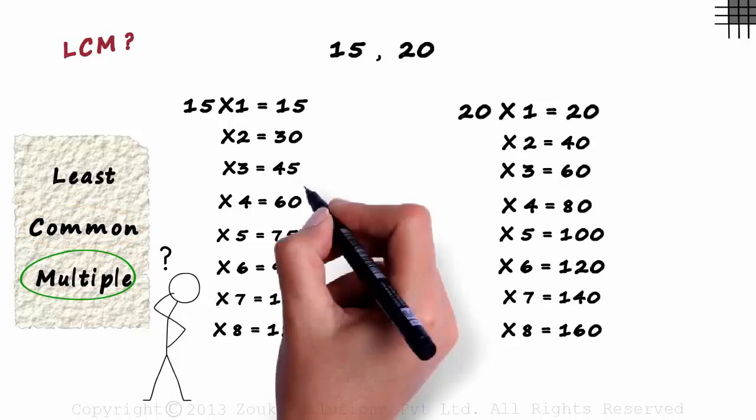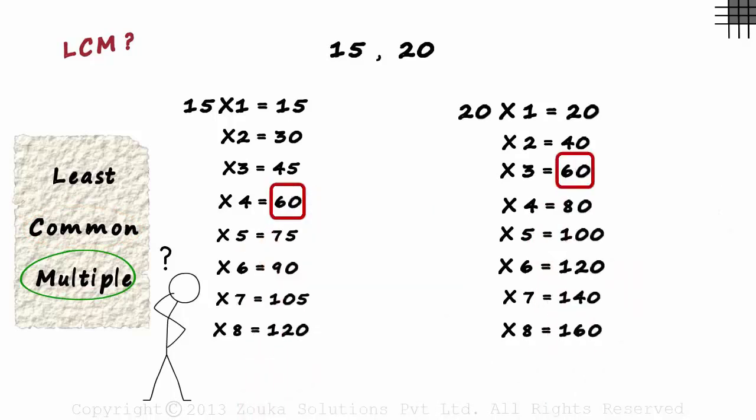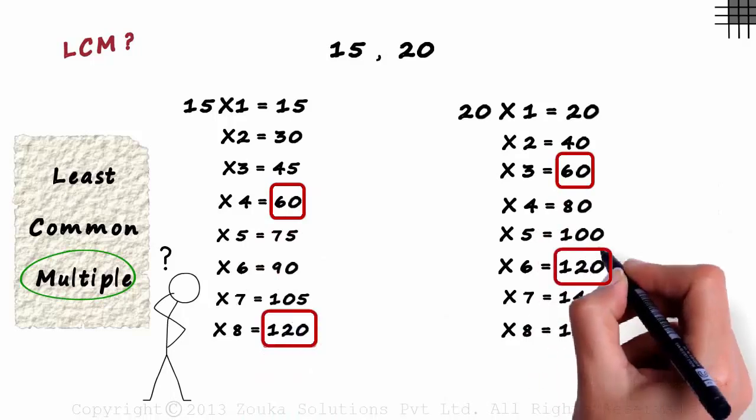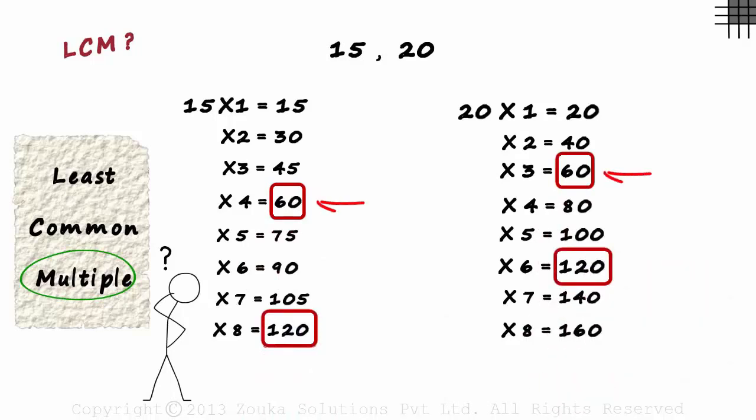We can see that 60 is present in both. Even 120 is present in both. 60 and 120 are two of the many common multiples of 15 and 20. So now we know what common multiples are.